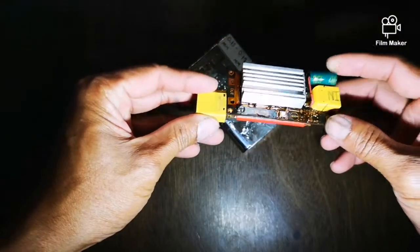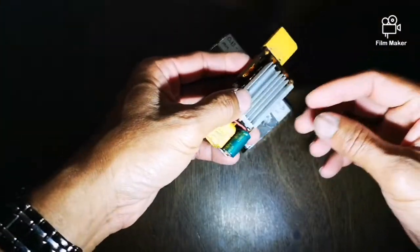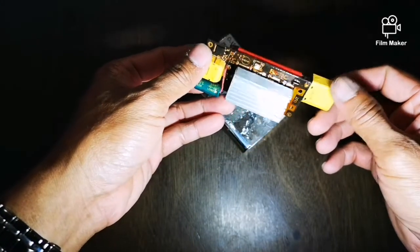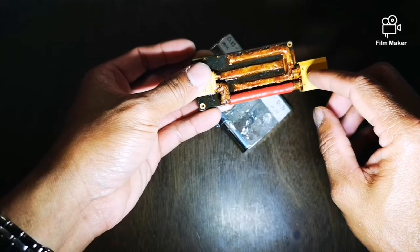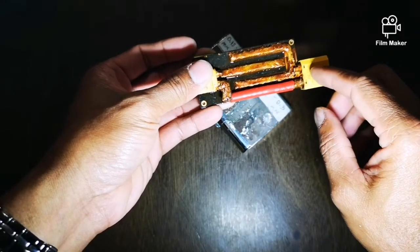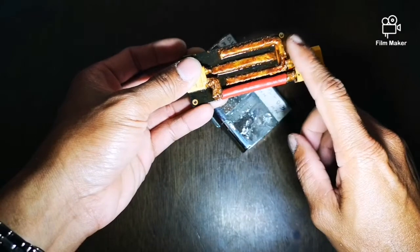This is my BIFRC improvised spot welder. The XT90 connector was supposed to be here, but I moved it.